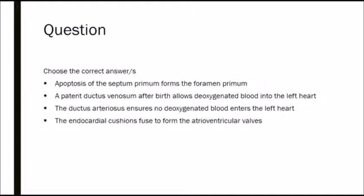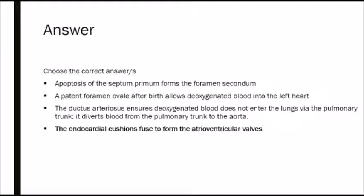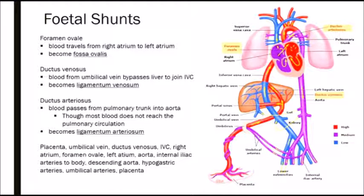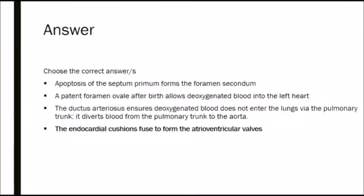Question: choose the correct answer or answers. Apoptosis of the septum primum forms the foramen primum. A patent ductus venosum after birth allows deoxygenated blood to the left heart. The ductus arteriosus ensures no deoxygenated blood enters the left heart, and the endocardial cushions fuse to form the AV valves. The answer is the endocardial cushions — they fuse to form the atrioventricular valve and also fuse to form the interatrial septum.